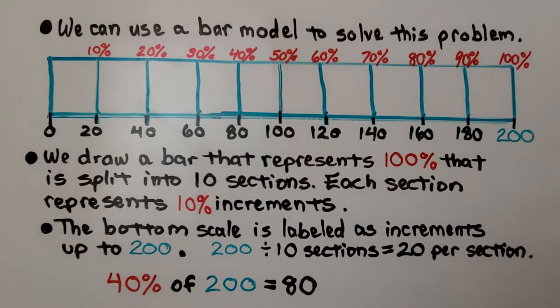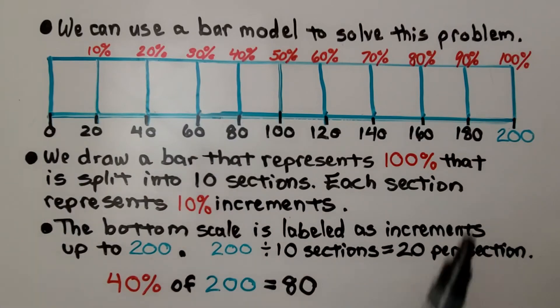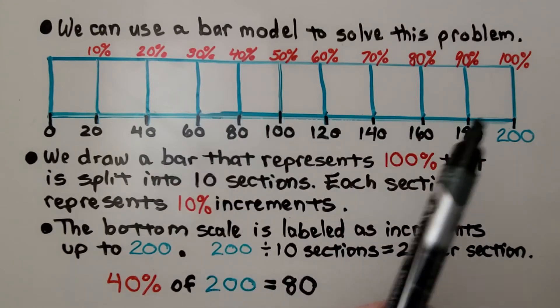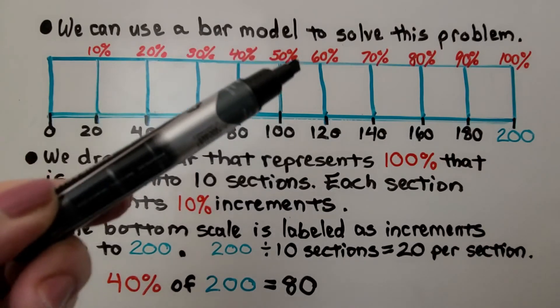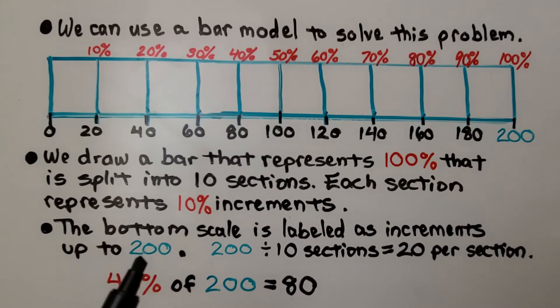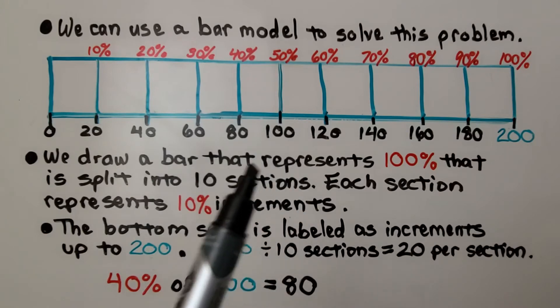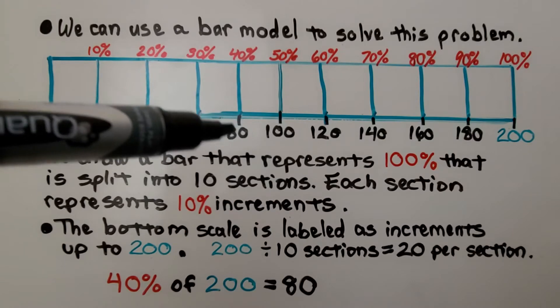We can use a bar model to solve this problem. We draw a bar, a big rectangle, that represents 100% that is split into 10 sections. Each section represents 10% increments. The bottom scale is labeled as increments up to 200. We have 200 divided into 10 sections. That's going to be 20 per section. So it's going to skip count by 20s. We can see 40% of 200 is equal to 80.